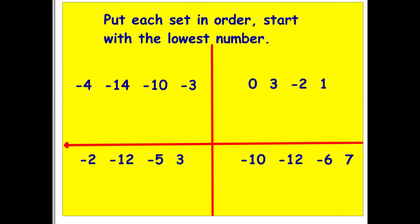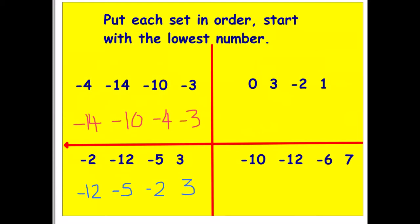On this slide there are four sets of numbers to place in order, starting with the lowest number. The set in the top left is negative four, negative fourteen, negative ten, and negative three. The lowest number is furthest from zero, so the order is: negative fourteen, negative ten, negative four, negative three. For the bottom left set — minus two, minus twelve, minus five, and three — the order is: negative twelve, negative five, negative two, three.